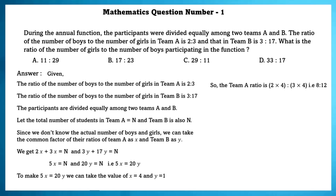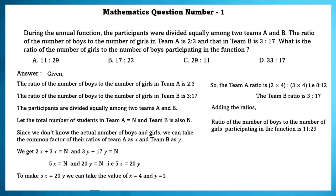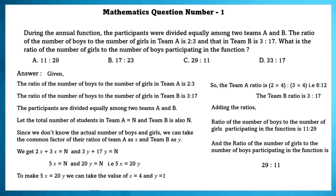So team A ratio is 2×4 : 3×4, that is 8:12. Similarly, team B ratio is 3:17. Adding the ratios, the ratio of the number of boys to the number of girls participating in the function is 11:29. And the ratio of the number of girls to the number of boys participating in the function is 29:11.